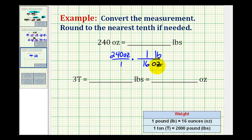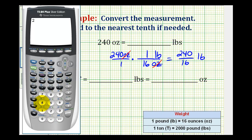Notice when we set the unit fraction up this way, the units of ounces simplify out and we're left with pounds. So this product gives us the number of pounds in 240 ounces. Our numerator is 240 and the denominator is 16, so we divide: 240 divided by 16 equals 15. So we have 15 pounds.